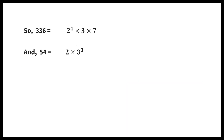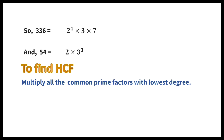To find HCF, multiply all the common prime factors with the lowest degree. Among 2 and 2 to the power of 4, the lowest degree is 2. So HCF is equal to 2 into 3, which equals 6.